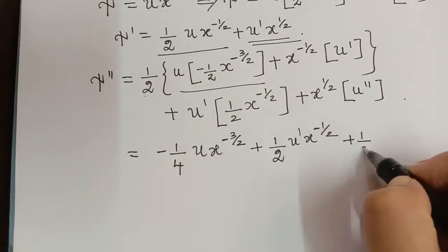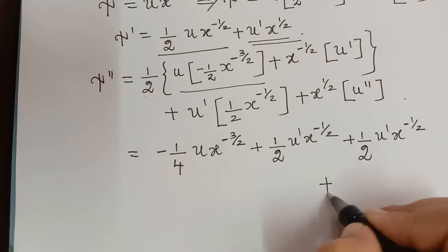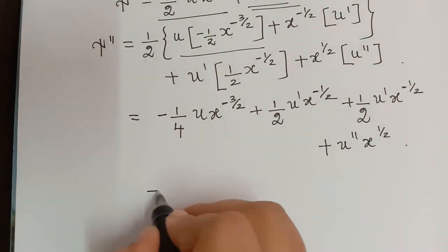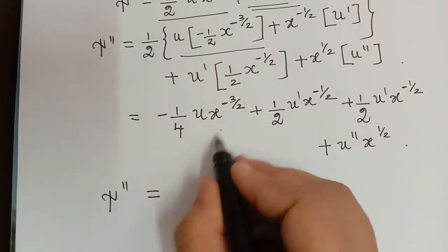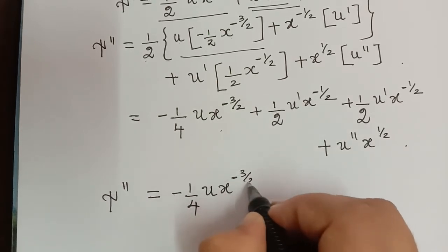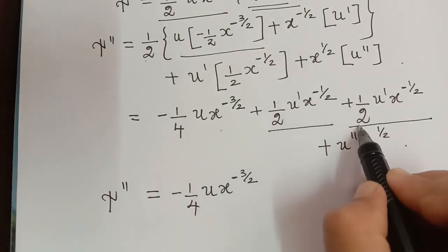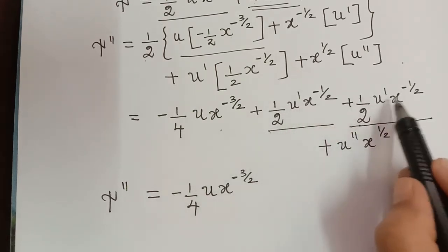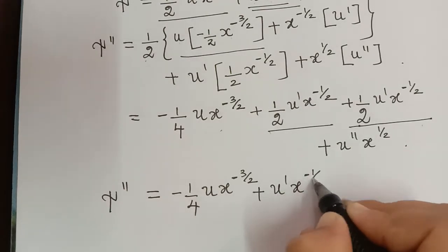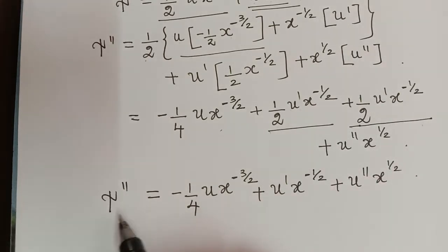Combining like terms, the two (1/2)u'·x^(−1/2) terms add up to u'·x^(−1/2). So ξ'' = −(1/4)u·x^(−3/2) + u'·x^(−1/2) + u''·x^(1/2).